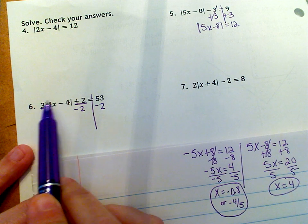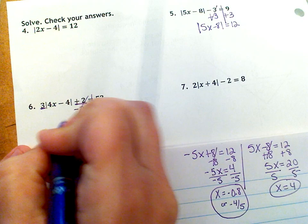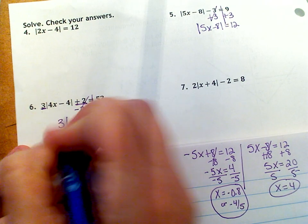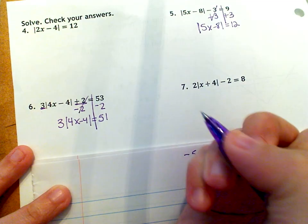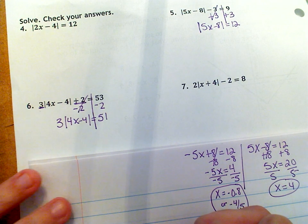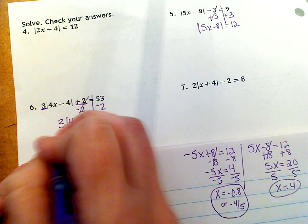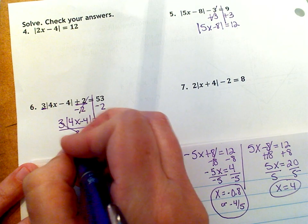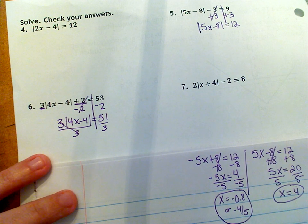I'm not subtracting two from anything else on this side, just from that positive two, so that they'll cancel. So three and then absolute value of four X minus four, and then that equals 51. Then we're going to divide both sides by three so that those will cancel.